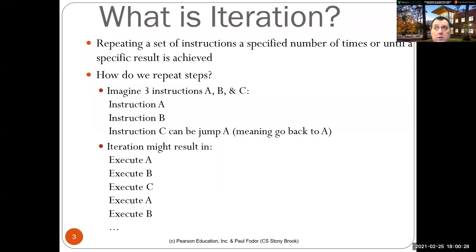And initially in original assembly programming languages, you had instructions like A, B, and then a conditional jump. Instruction C is a jump back to A or a conditional jump. If some condition was true, go back to A, otherwise just continue.